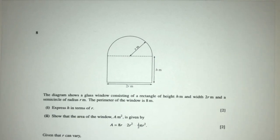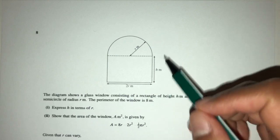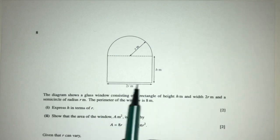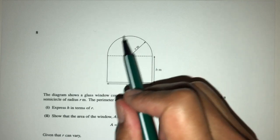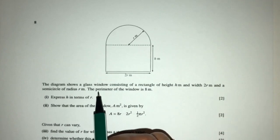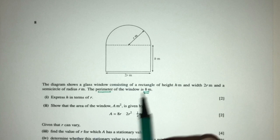Now in this question, the diagram shows a glass window consisting of a rectangle of height h and width of 2r right here, and a radius of r for this semicircle. The perimeter of the window is this. So this is something given to you.